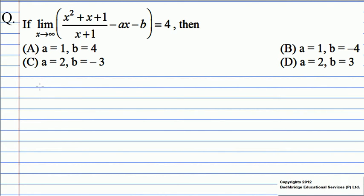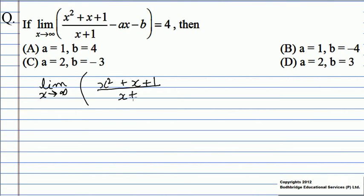Given that the limit as x tends to infinity of (x² + x + 1)/(x + 1) minus ax minus b equals 4.